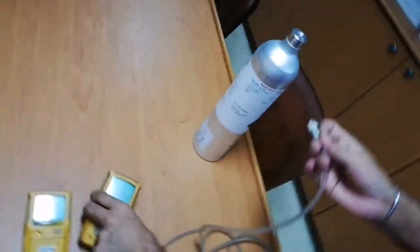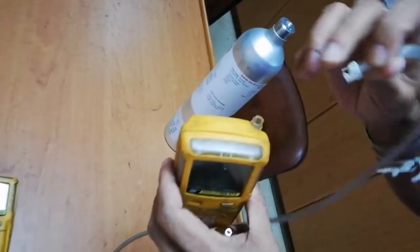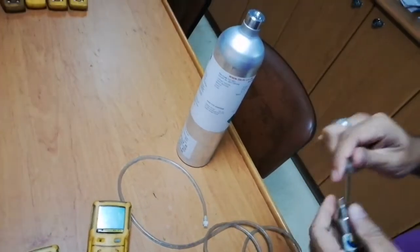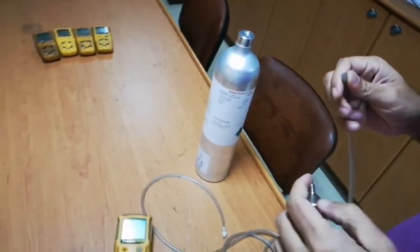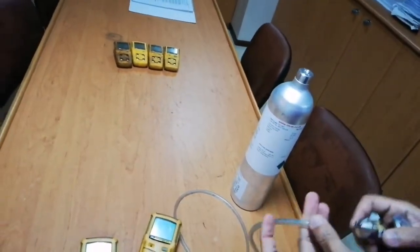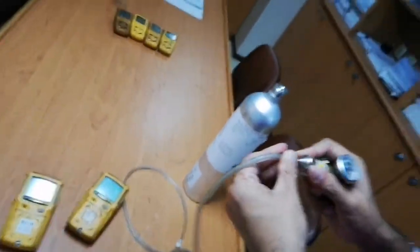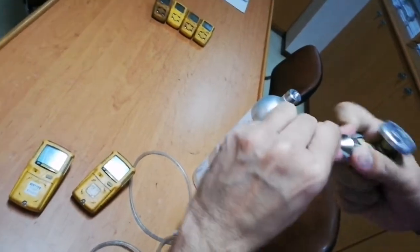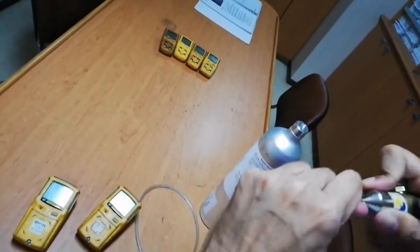This air pump is used to suck the sample air. This is the sample air inlet where we use this sample hose. I'm going to connect this sample hose to this regulator. Normally we're using 0.5 liter per minute regulator. First, we'll connect this end to the regulator.